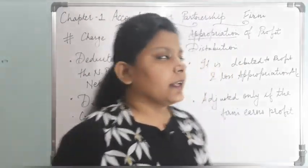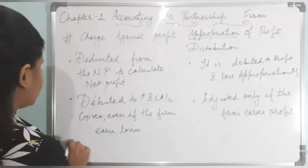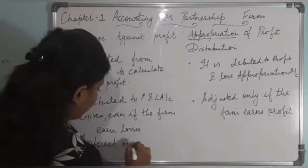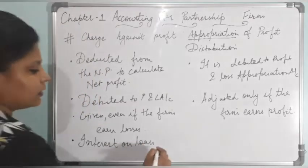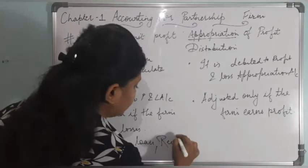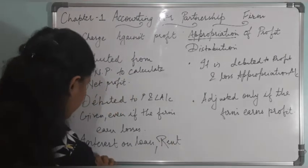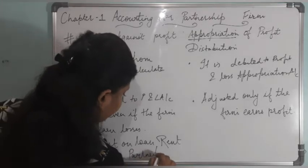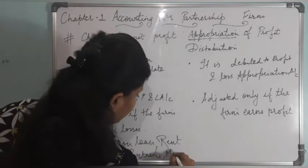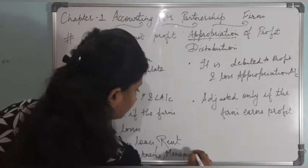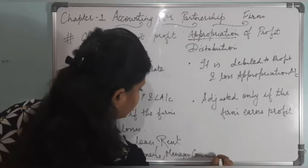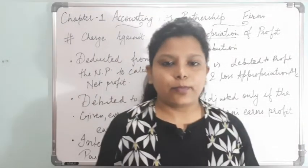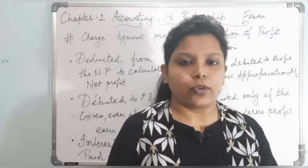Now, examples of charge against profit: interest on loan — we debit those items in the profit and loss account. Rent paid to a partner, and manager's commission are also examples. These three items will be first deducted from the net profit to calculate the actual net profit.